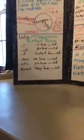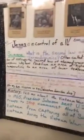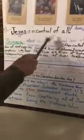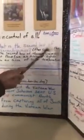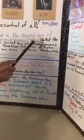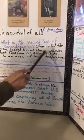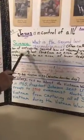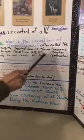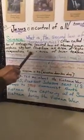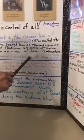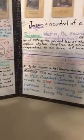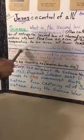We all know Jesus is in control of all things, including learning. Amen! Science: what is the second law of thermodynamics? The second law of thermodynamics, often called the law of entropy, explains why heat flows from an area of higher temperature to an area of lower temperature. Entropy means randomness or disorder.